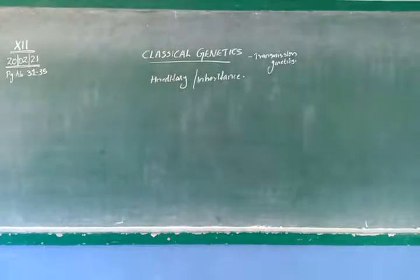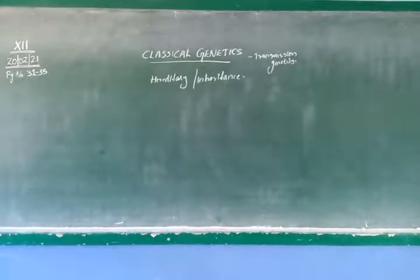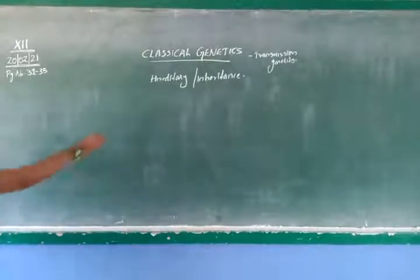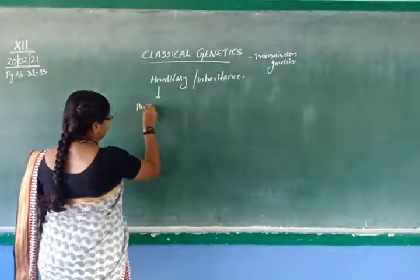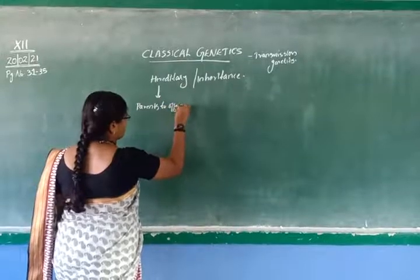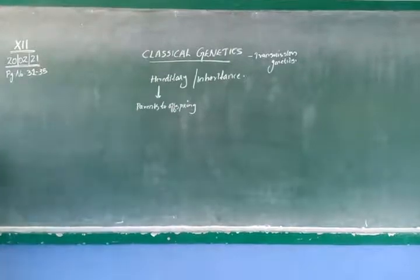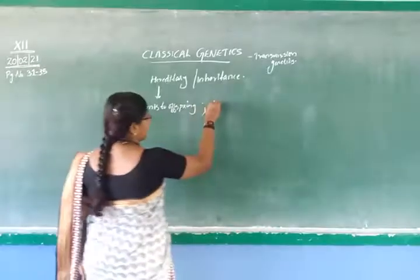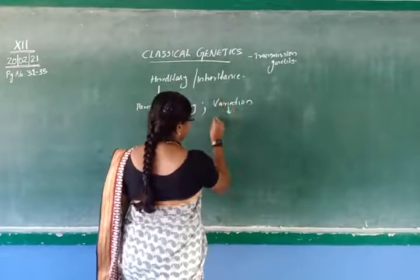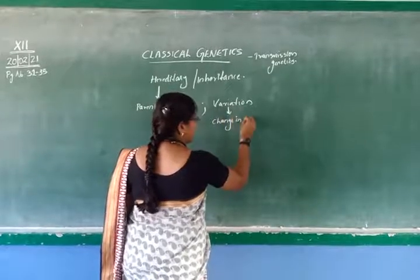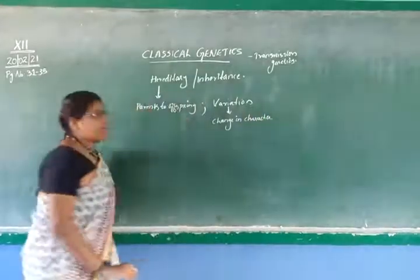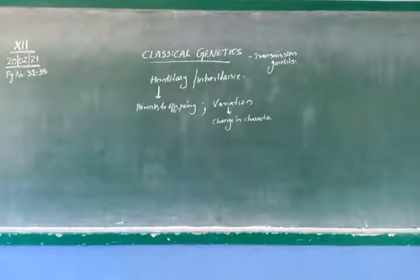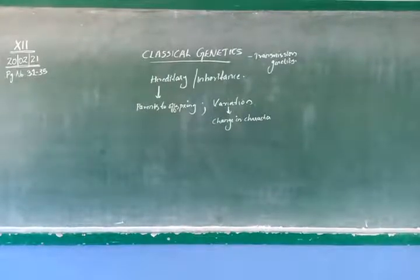We discuss the study of heredity. What is heredity? Heredity is the transmission of characters from one generation to another — from parents to offspring. The character transmission from parents to offspring is heredity. Then what is variation? Variation means change in a particular character of a species in a population. Change in the character of individuals of a species in a population is called variation. Heredity deals with characters transferred from one generation to another; variation means change in those characters.